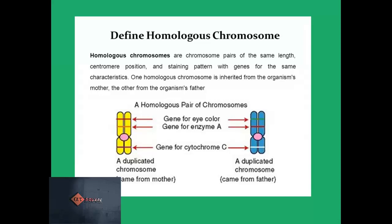The chromosome pairs numbered 1 to 22 are also referred to as homologous chromosomes. Homologous chromosomes are chromosome pairs of the same length, centromere position, and staining pattern, with genes for the same characteristics. One homologous chromosome is inherited from the organism's mother, the other from the organism's father. As we can see in the picture, the gene for eye color is present in the same position in both, the gene for enzyme A is present in the same position in both, and the gene for cytochrome C is also present in the same position.